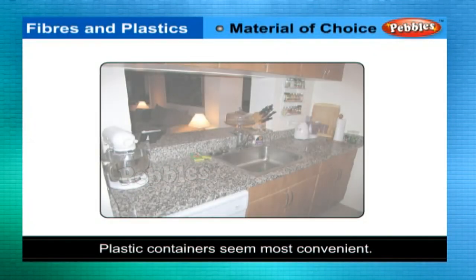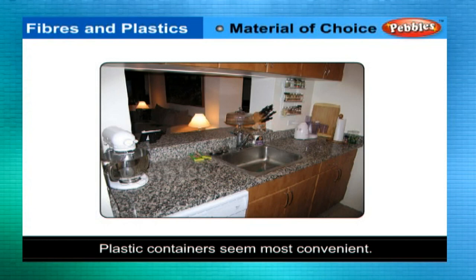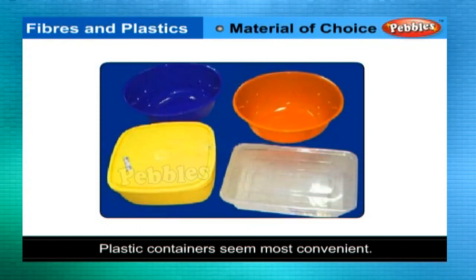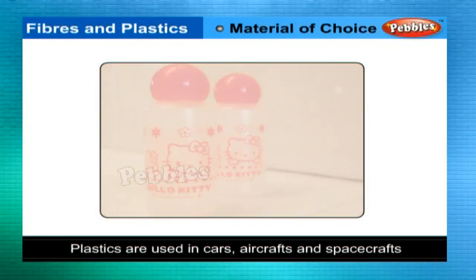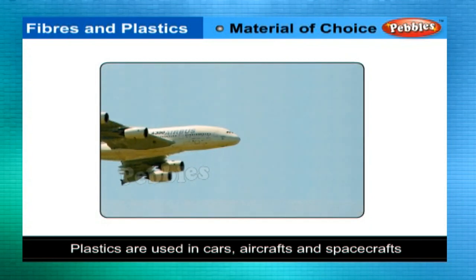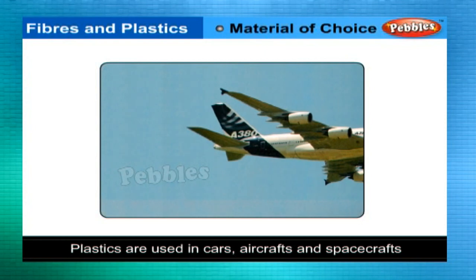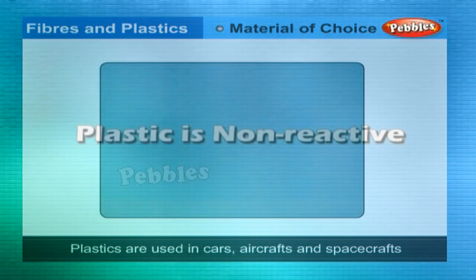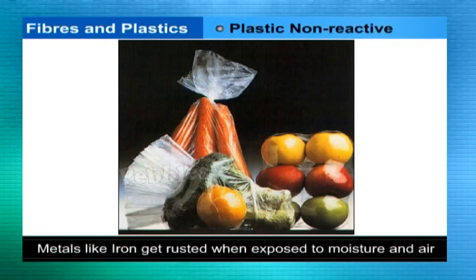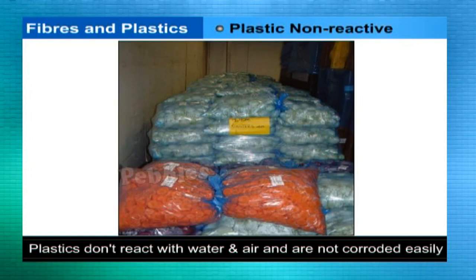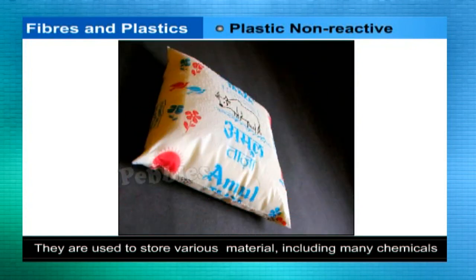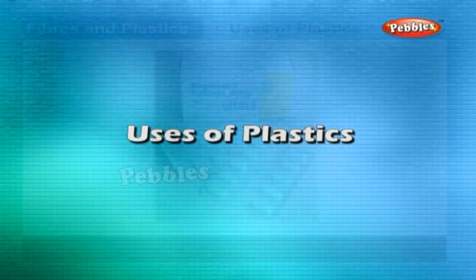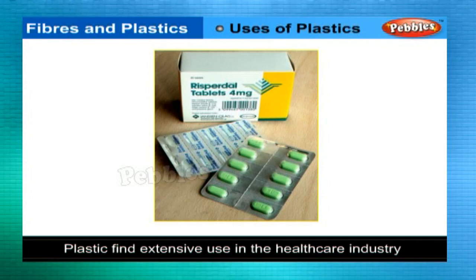Materials of choice: for storing food items — water, milk, pickles, dry food, etc. — plastic containers are most convenient due to their lightweight, lower price, good strength, and easy handling. Being lighter than metals, plastics are also used in cars, aircraft, and spacecraft. Plastic is non-reactive: unlike metals such as iron which rust when exposed to moisture and air, plastics do not react with water and air and are not easily corroded, so they are used to store various materials including many chemicals.